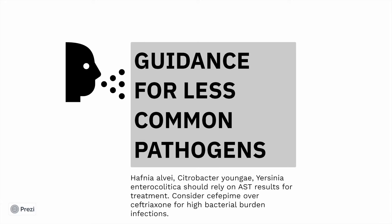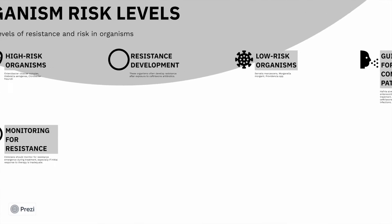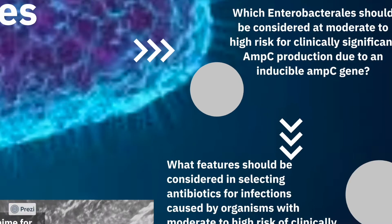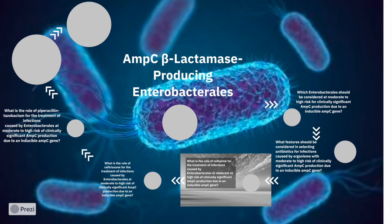The guidance for less common pathogens — Hafnia, Citrobacter, and Yersinia — is to rely on sensitivity results and consider cefepime over ceftriaxone when you have a high bacterial load, especially with these organisms. Clinicians should also monitor for emergence of resistance during treatment, especially if the initial response to therapy has been inadequate.